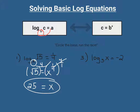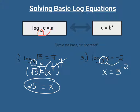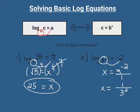Number three is also in log form, so we're going to get it into exponential form. We circle the base and run the race — the word log drops off. We bring x down, and the three becomes the base on the other side of the equation, so the negative two becomes our power: three to the negative two. To handle the negative exponent, we make it positive by moving the term to the other side of the fraction bar. Three to the negative two moves to the denominator, becoming three to the positive two, with a placeholder of one on top. Since three squared is nine, that leaves us with one over nine.